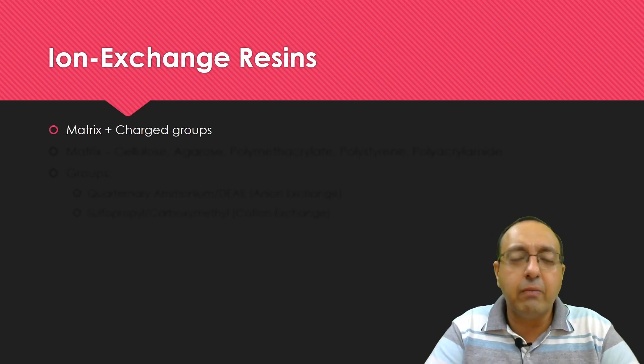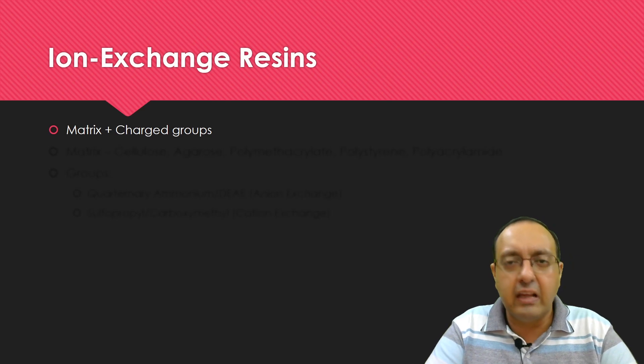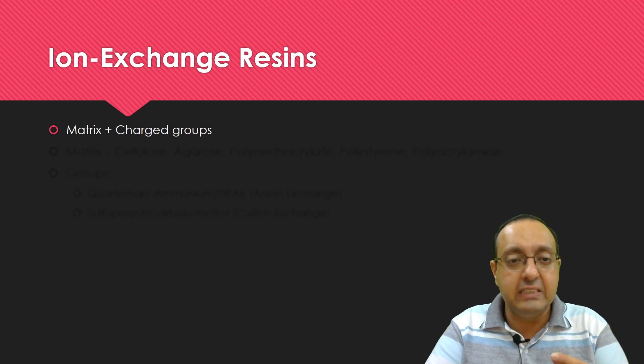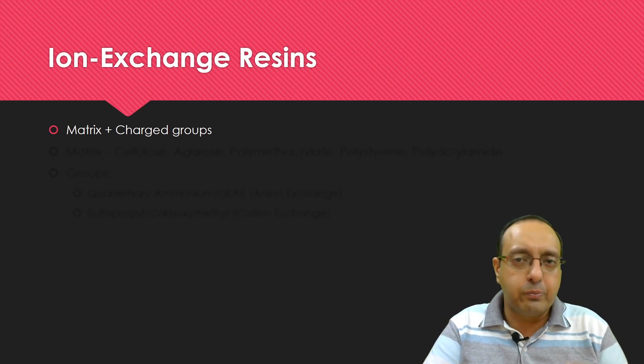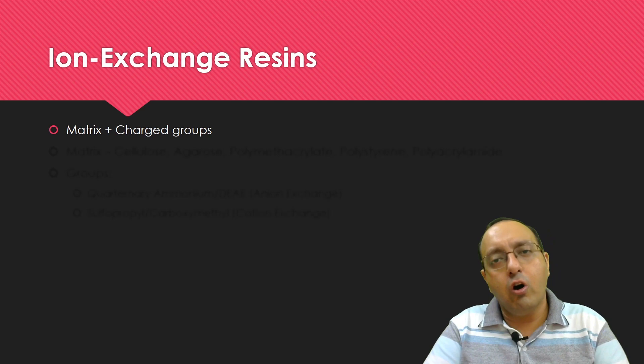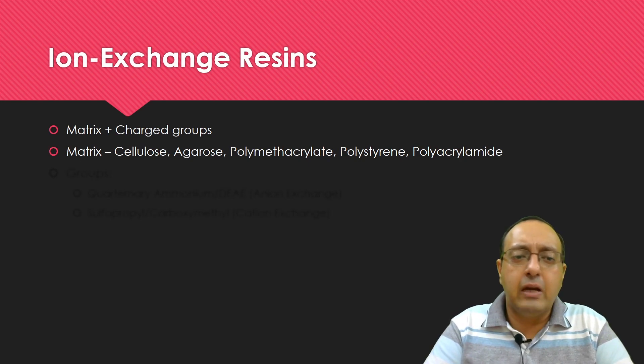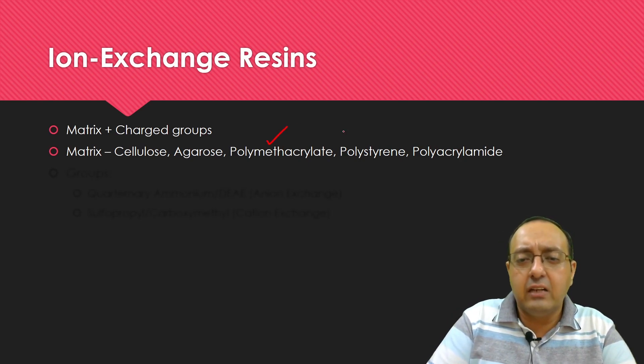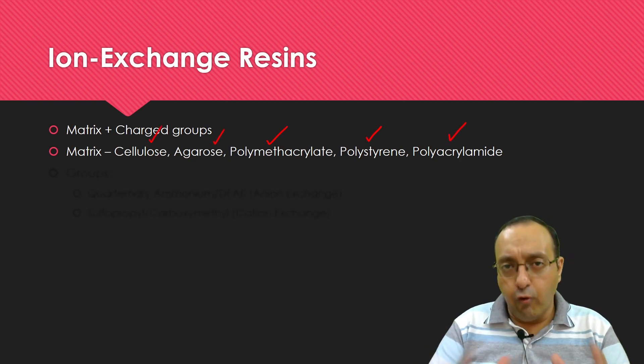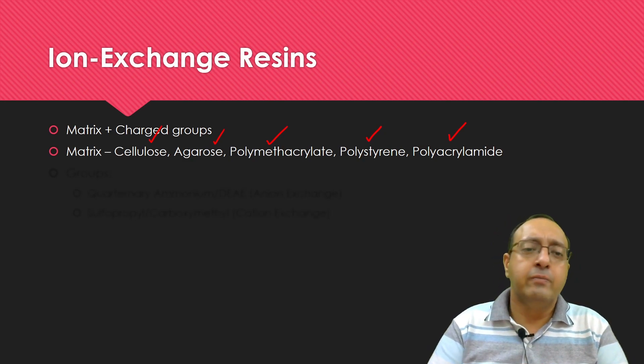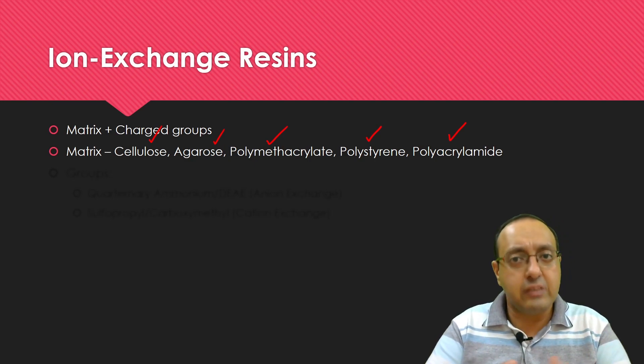Ion exchange resins are made up of a matrix which is hydrophilic, pretty strong, beaded. It is in the form of very, very small microscopic beads. Along with them, charge groups have been attached. These charge groups can be negatively charged in case of cation exchange chromatography or positively charged in case of anion exchange chromatography. The matrix can be made of cellulose, agarose, polymethacrylate, polystyrene, polyacrylamide. These have different characteristics regarding how much flow of solvent they can accommodate, how much pressure they can accommodate, what is the bead size, and what kind of separation do they achieve.